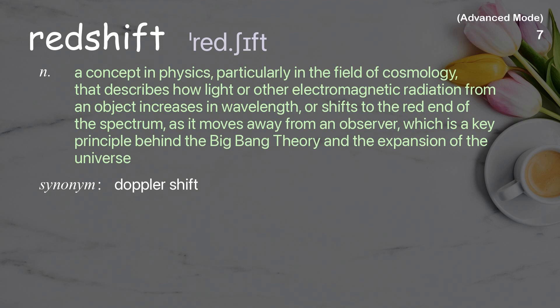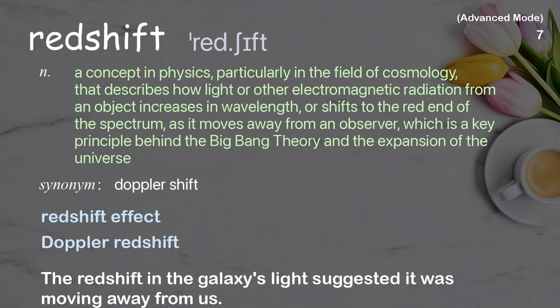Red shift. A concept in physics, particularly in the field of cosmology, that describes how light or other electromagnetic radiation from an object increases in wavelength, or shifts to the red end of the spectrum, as it moves away from an observer — which is a key principle behind the Big Bang theory and the expansion of the universe. Examples: redshift effect, Doppler redshift. The redshift in the galaxy's light suggested it was moving away from us.